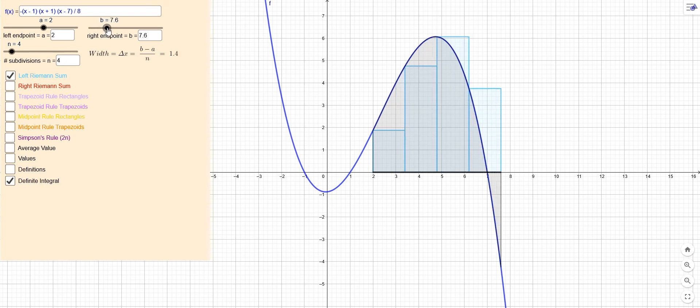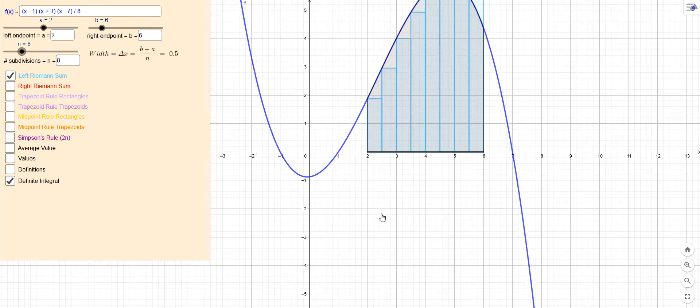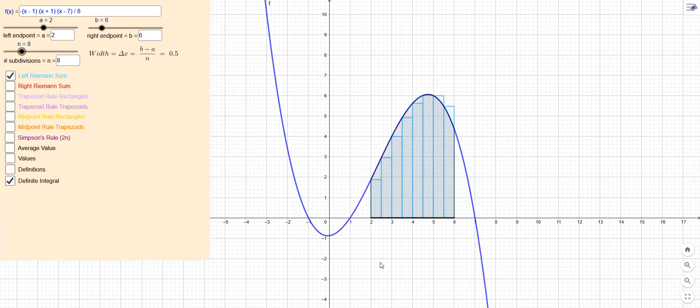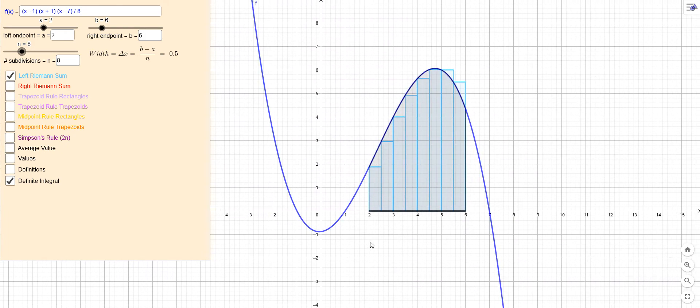And notice that if I change a or b here, or if I change n, that's going to change the width of the rectangles here, which you can see as well. So for example, if I go to 8, now they're all going to be width one half. I can zoom in or out or move around with my mouse here.